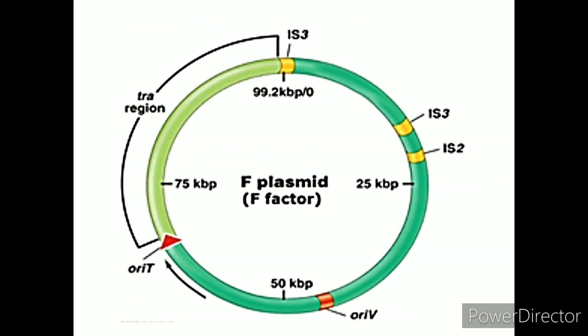Fertility F plasmids. Fertility plasmids, also known as F plasmids, contain transfer genes that allow genes to be transferred from one bacteria to another through conjugation. These make up the broad category of conjugated plasmids. F plasmids are episomes, which are plasmids that can be inserted into the chromosomal DNA. Bacteria that have the F plasmid are known as F positive, and bacteria without it are F negative. When an F positive bacterium conjugates with an F negative bacterium, two F positive bacteria result. There can only be one F plasmid in each bacterium.